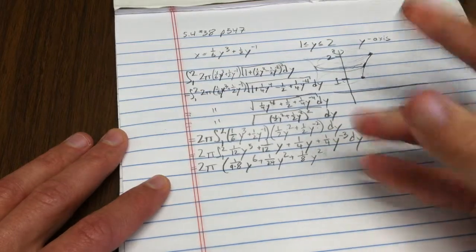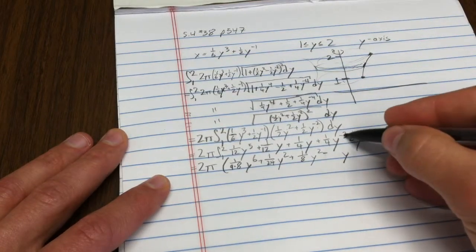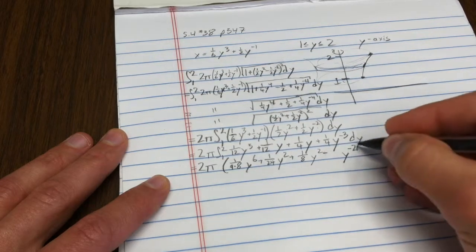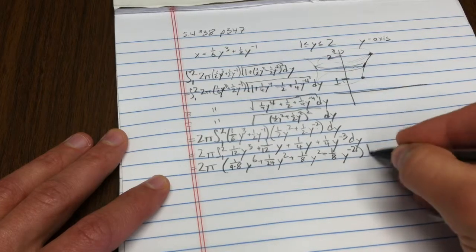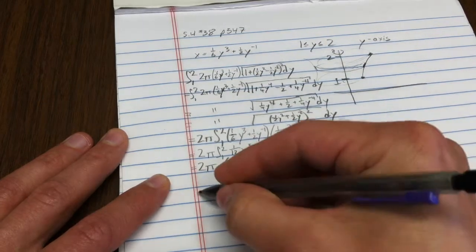Then here I have y squared again, got to divide by two, so that's one-eighth y squared. Here, this becomes negative because when I add one—here's why I like to write it as a negative exponent, it's easier to integrate—I have to divide by negative two, that becomes negative one-eighth. And I'm evaluating that from one to two.